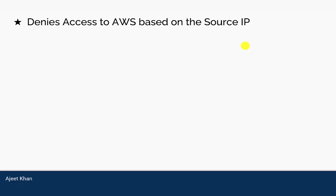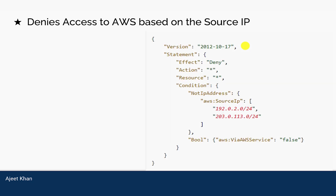First, we are going to see IAM policy based on source IP. Here is our IAM policy — it's a deny rule. The effect is deny and we are denying every action; the asterisk sign means all. We are denying all actions on all resources based on this condition. The condition is based on source IP: we deny everything on all resources if the request is not from these IP ranges. Any request coming from these IP ranges will be allowed, but any request not coming from either of these two ranges will have the effect of deny.